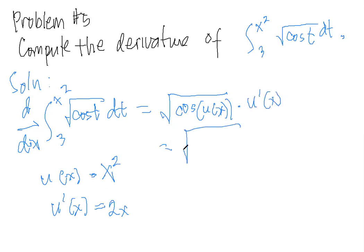So we have the square root of cosine, and u of x is equal to x squared. And the derivative of u is equal to 2x. So our final answer is 2x times the square root of cosine x squared.